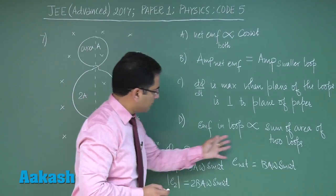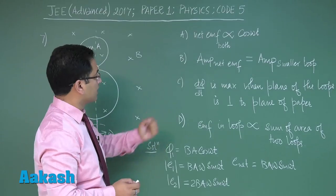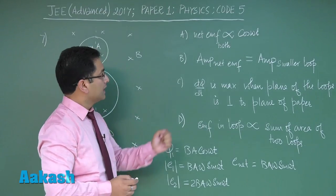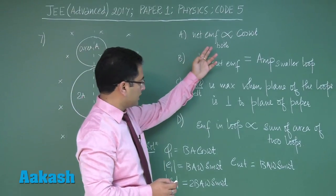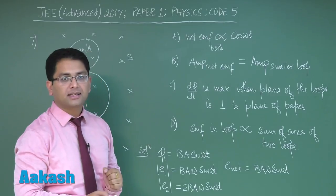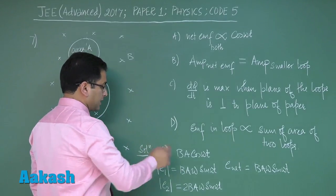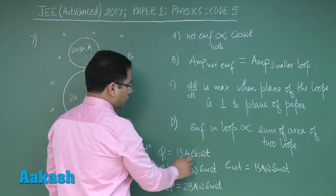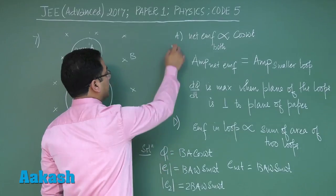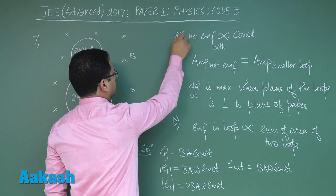Now on the basis of this fact, we can answer all the options. Net EMF on both is directly proportional to cos omega t - that option would be incorrect. Rather the flux is directly proportional to cos omega t, not the EMF, so option A would be incorrect.